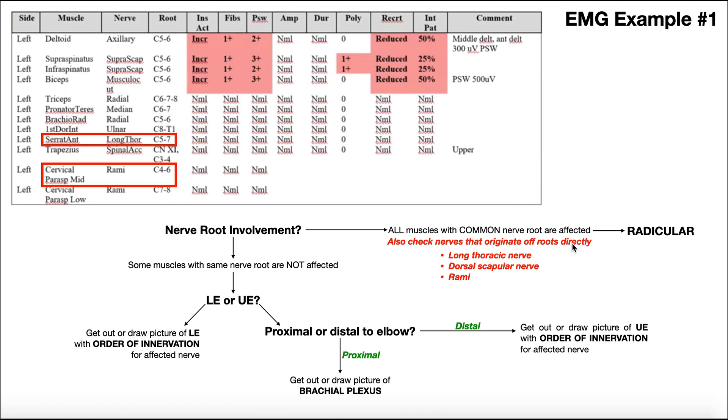You just need to be aware of the nerves that come directly off of the nerve roots, and those are the long thoracic nerve if it's up there, which it actually is, the dorsal scapular nerve, which is not on here, and then any rami, and these are usually associated with the paraspinal muscles in the deep back.